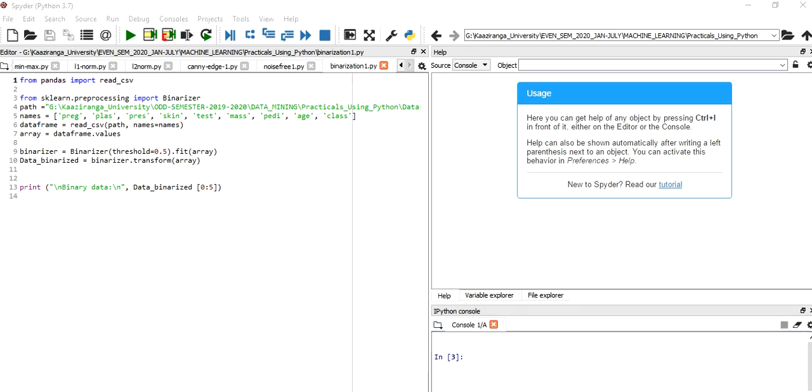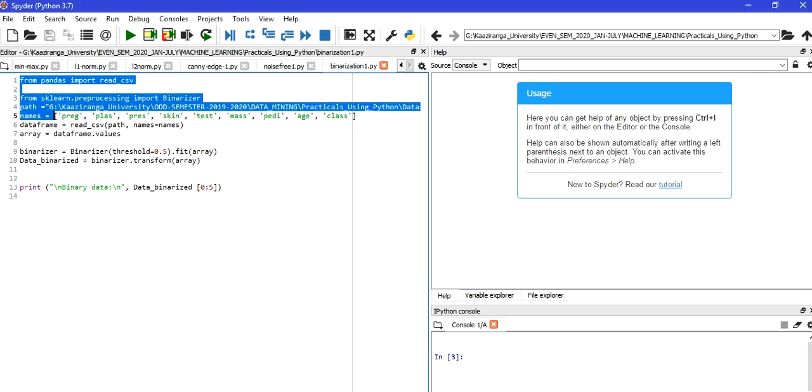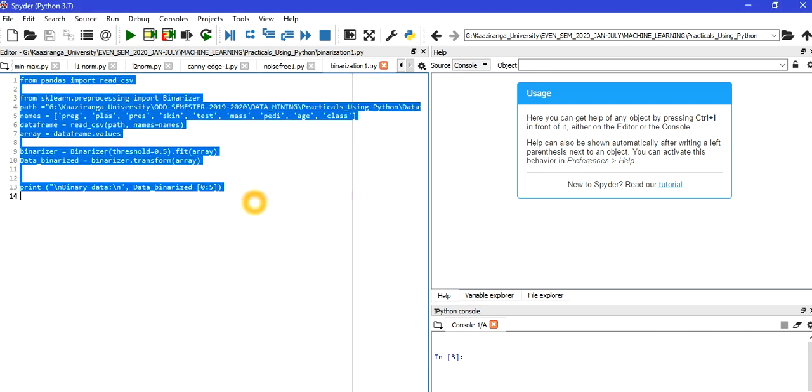So we have opened our Python IDE. And I have written the code as it is what I have just illustrated to you. And I have saved this as the file name binarized 1.py. You can give any suitable name you want. So let's run this. So the file is running. You can see the output. This is the output.